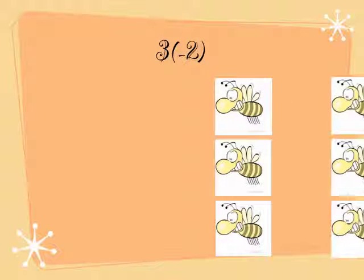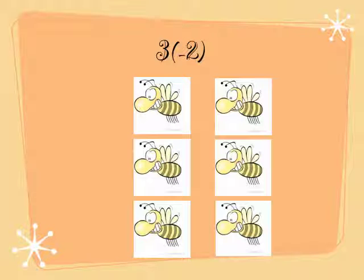Our fifth problem is 3 times negative 2. There are 3 pairs of bees in the garden. Each pair has 2. So altogether, there are 6 bees in the garden.